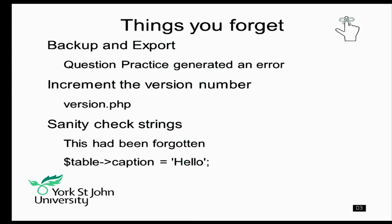There are things you forget — things I forget anyway. For example, it's really easy to forget backup and export, because you're furiously just using the core functionality. The Question Practice generated an error message there. You need to increment the version number so the updates happen when it's installed. And then just do some sanity checking — I found there was a table that had the caption 'hello,' and I replaced that with something more meaningful.